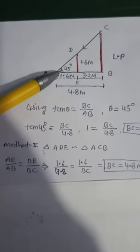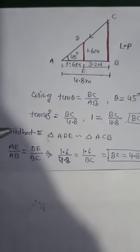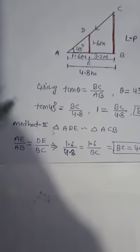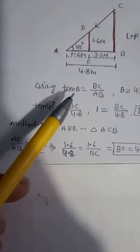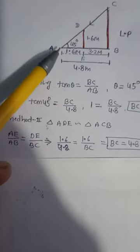But this is a trigonometric problem, so we will use the trigonometric concepts. We have to find the lamppost height, so using tan theta, we'll apply it in triangle ACB.